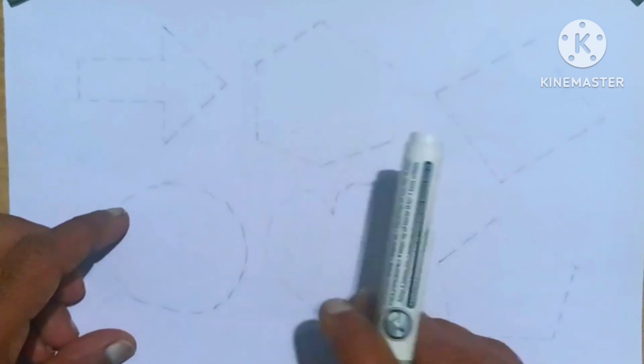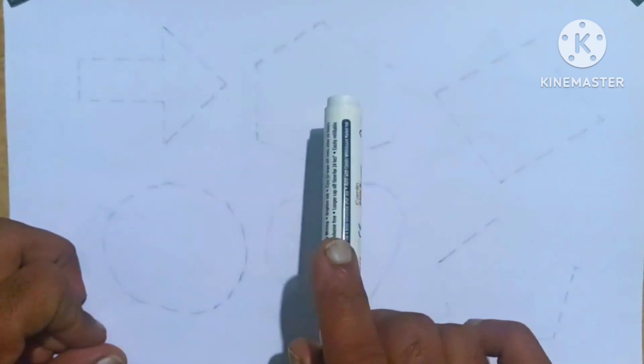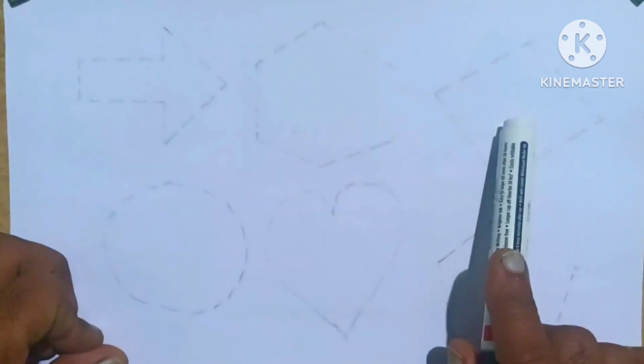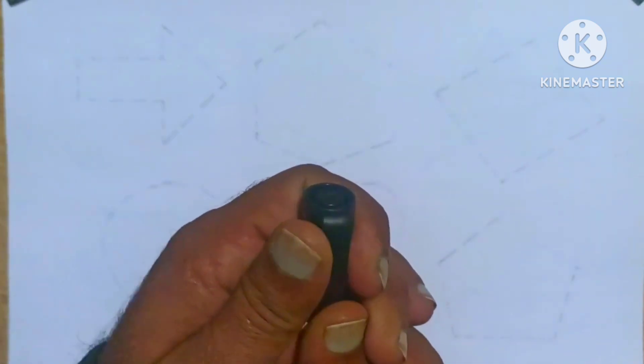First we learn the shapes, all such 2D shapes: arrow, hexagon, rhombus, circle, heart, pentagon. Now draw and learn again.